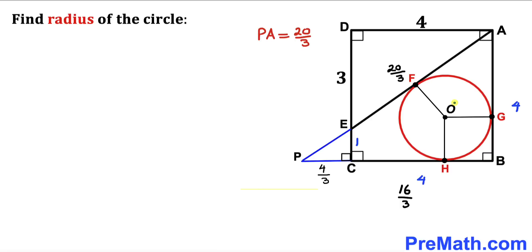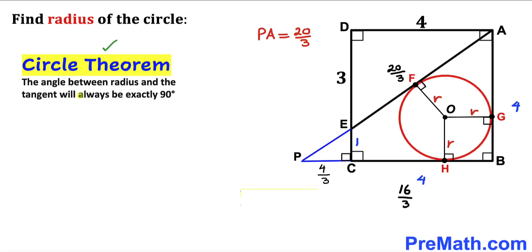In the next step, I have connected center O with the points of tangency F, G, and H, giving us the radii — each labeled lowercase r. By the circle theorem, the angle between a radius and a tangent is always 90 degrees, so all these angles are 90 degrees.